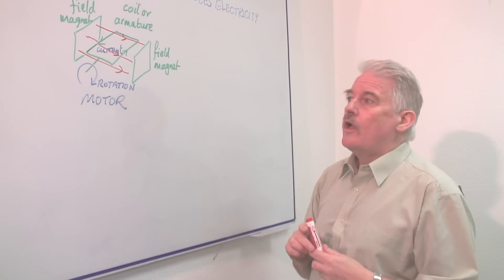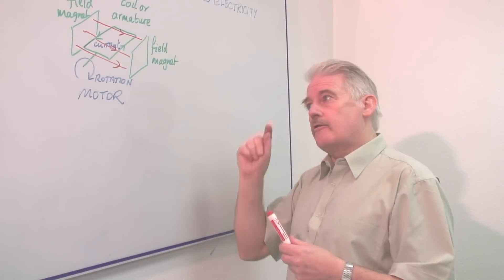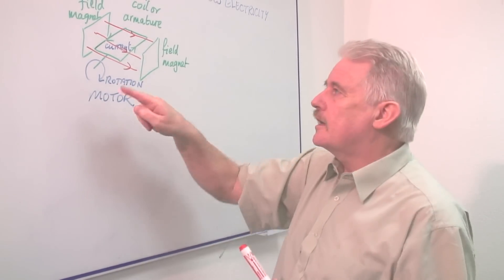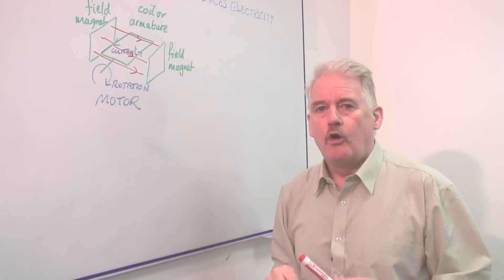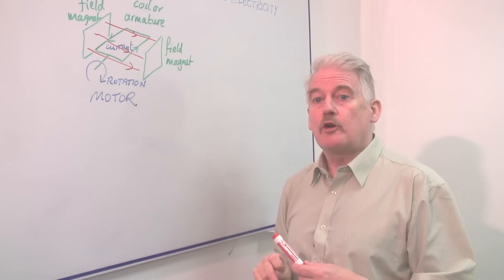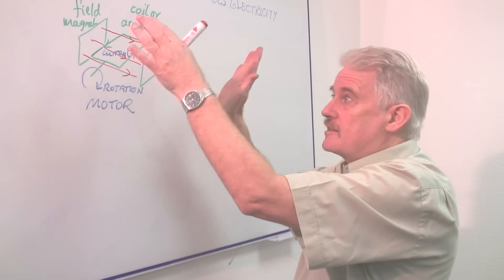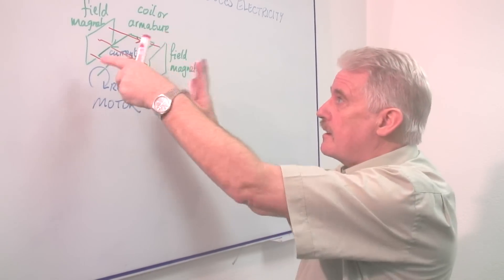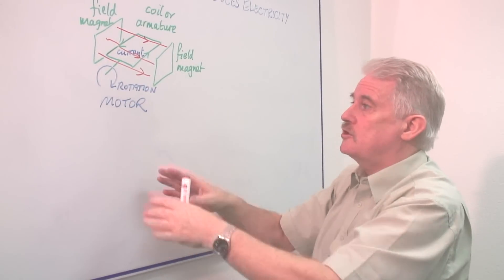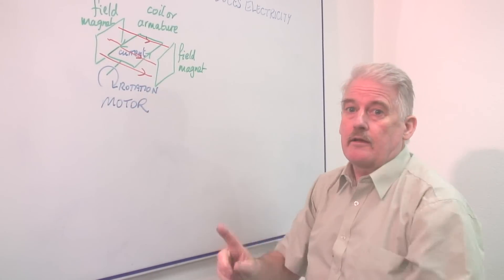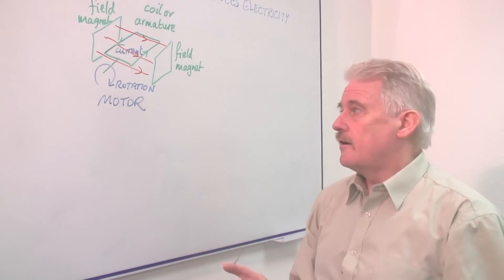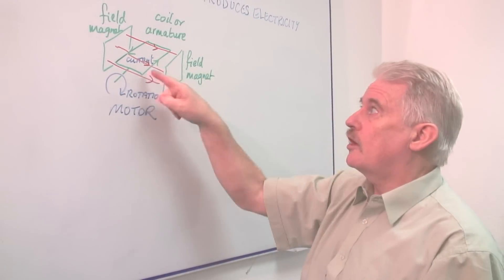So, if I were to say, instead of putting current into this coil, what I'm going to do is I'm going to turn the coil. The whole thing stays exactly the same. It's the same field magnets, the same armature, the same everything. The only difference is, I don't have a battery to push current through.